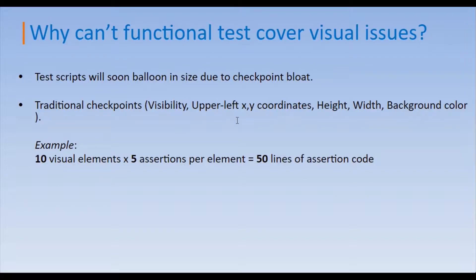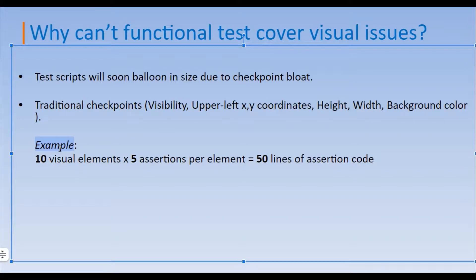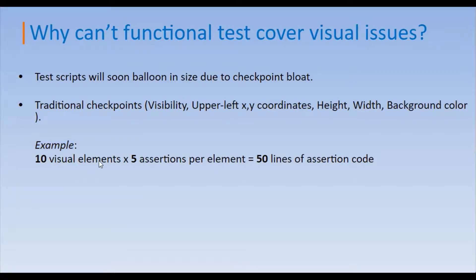For example, if we have ten different visual elements on a web page and for each element we perform five assertions — checking visibility, coordinates, height, width, and background color — that results in 50 lines of code in your Selenium script. It will soon balloon in size due to checkpoint proliferation.